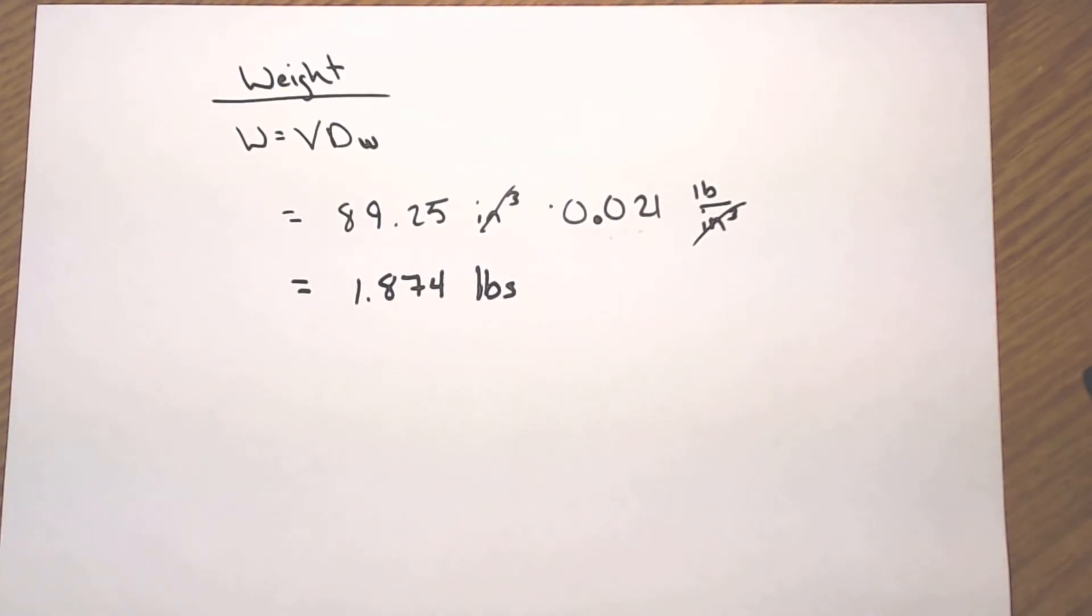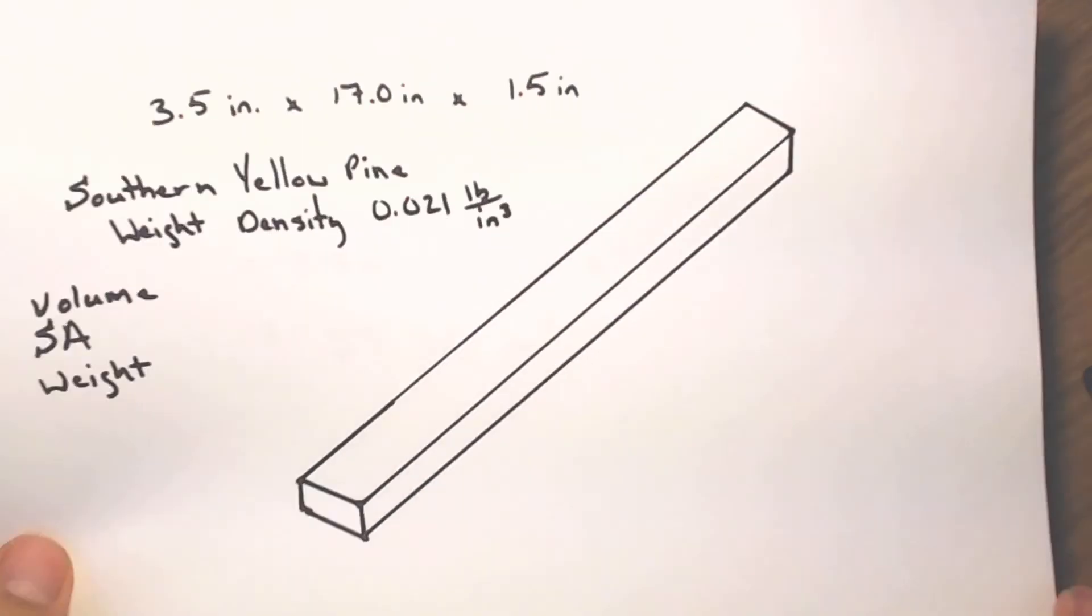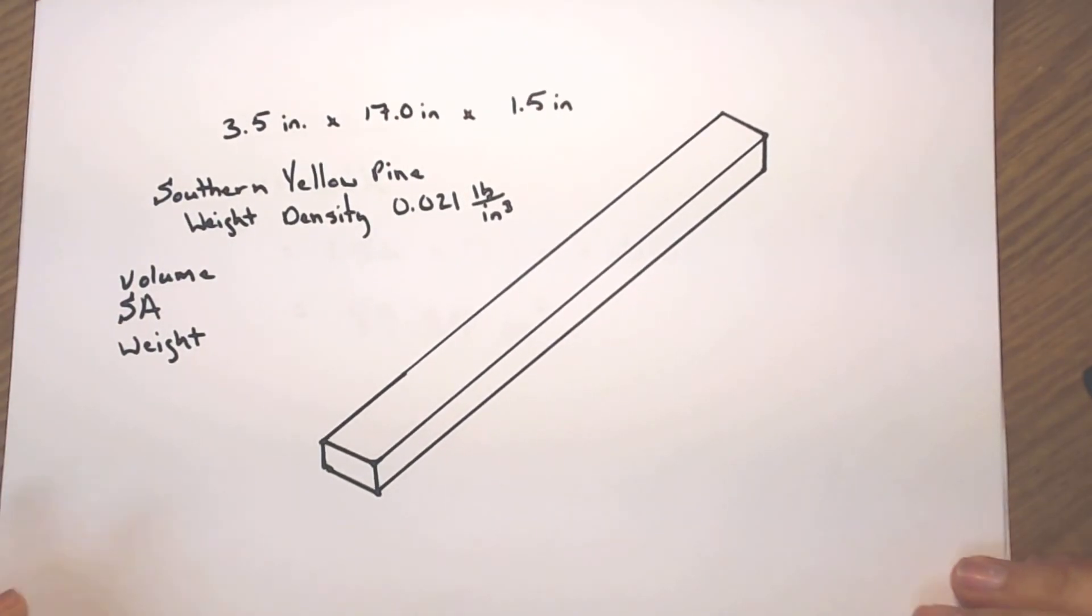So that is finding volume, surface area, and weight of a rectangular prism. If this video is helpful, please click that like button. Subscribe to the channel if you want to see more like this. And as always, everybody, please have a great rest of your day.